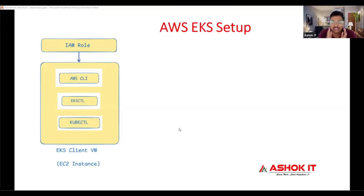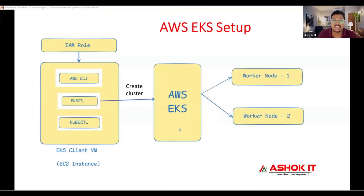We are using the EC2 instance to create the EKS cluster. When one service wants to access another service in AWS, IAM roles are required. Once the IAM role is attached with this machine, by using eksctl software we are going to create the cluster. eksctl is used as a command line utility to set up the EKS cluster in AWS. Once cluster creation is completed, the control plane will be available along with two worker nodes.